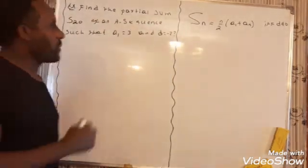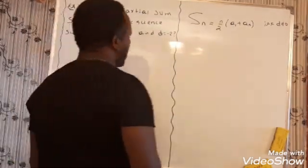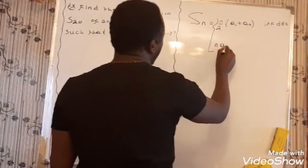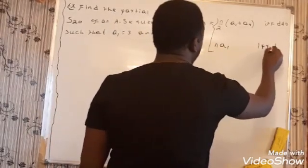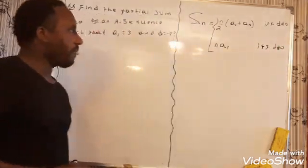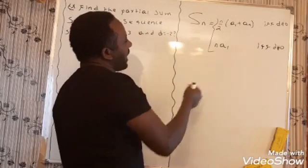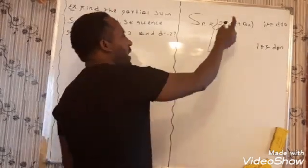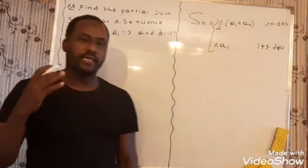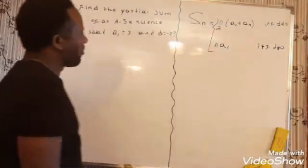This formula applies if the common difference between the terms is different from zero. Otherwise, if the common difference is exactly zero — meaning the sequence is a constant sequence — the partial sum is given by N times A1. So the partial sum of any arithmetic progression is given by either this formula or this formula.